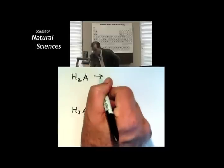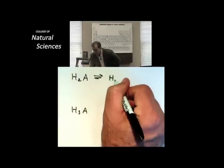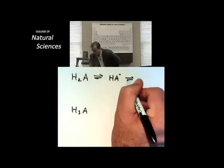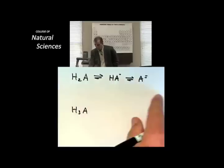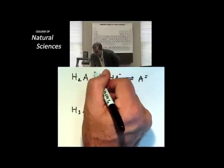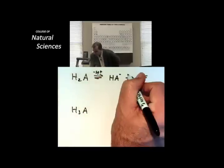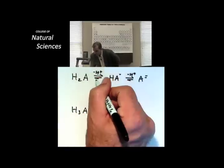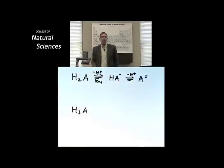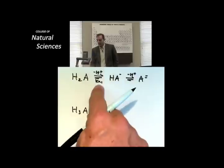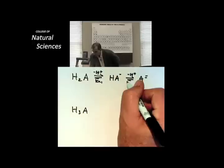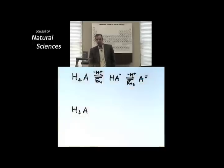H2A is going to lose a proton to make HA- and HA- is going to lose a proton to make A2-. See how simple that is? I am going to lose the proton here. I'm going to lose a proton there. This first loss is KA1 because the strongest acid, the most protonated species gets to be called KA1 and the second one gets to be called KA2. Down here with H3A, I can do the same thing.